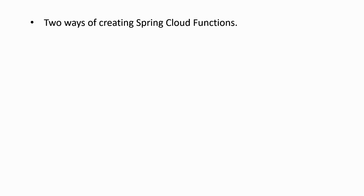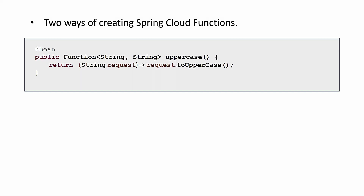There are two ways of creating a Spring Cloud Function. The first one is to create a method which returns a function. In our case it's an uppercase method which returns a function. It simply takes the input as a string, uppercases it, and returns it as a string. This method needs to be provided and exposed as a bean of type function.